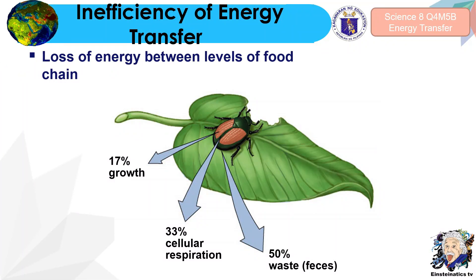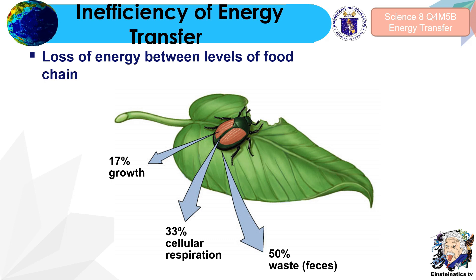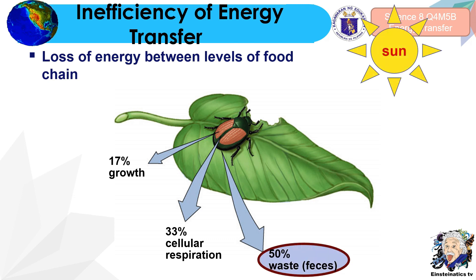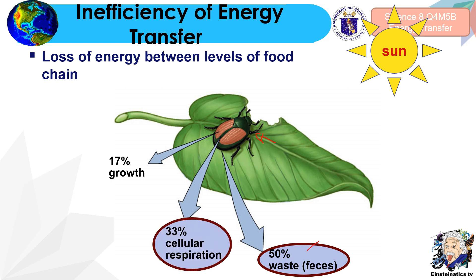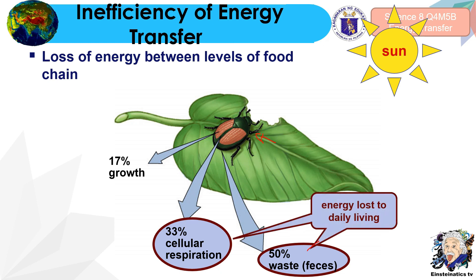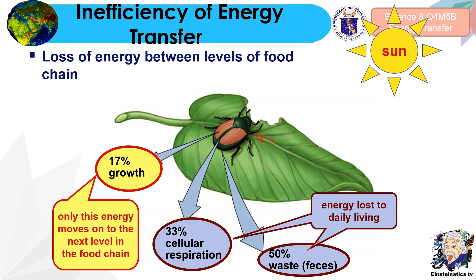You might be wondering: why is there an inefficiency of energy transfer? Why isn't all the energy from the sun absorbed by the organisms? There is a loss of energy between levels of the food chain. So where does the lost energy go? The energy from the sun is absorbed by the producers, but not all of that energy can be passed on to the primary consumer. About 50% goes to waste or feces, 33% is used for cellular respiration, and 70% is used for growth. Only a portion of energy moves on to the next level in the food chain.